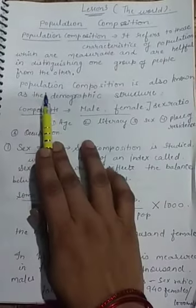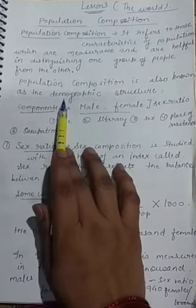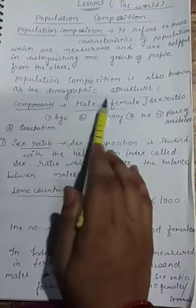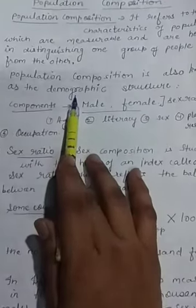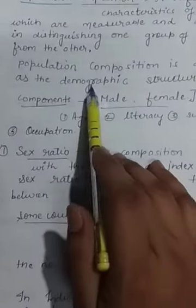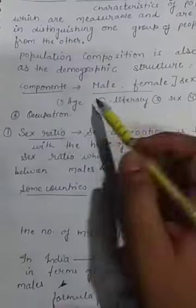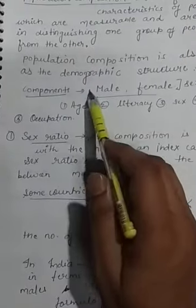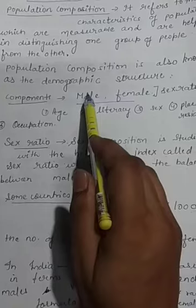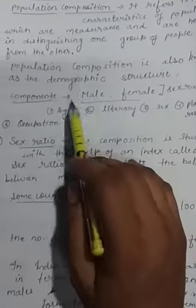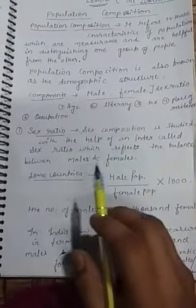In geography, population composition is also known as demographic structure. Demographic means it is totally related to data — how much population is there in any area. Whatever the census tells you is totally related to the demographic structure of an area, which is the same as population composition.